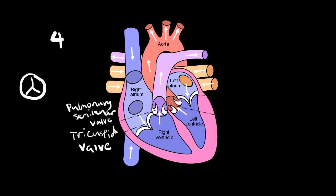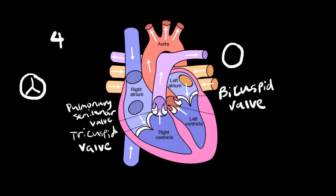Now we go to the left side of the heart. The first one here is right between the left atrium and the left ventricle. This is called our bicuspid valve. This one is actually a bit different — as you might tell from the name, bicuspid meaning two flaps. So instead of three, we have two flaps. This is sometimes also called the mitral valve, so you might hear mitral or bicuspid valve — these are all referring to the same thing.